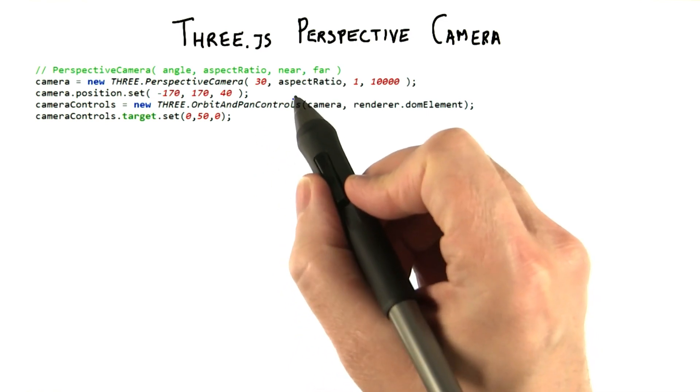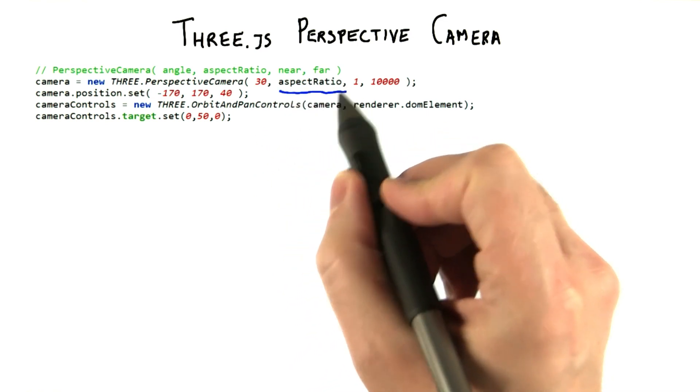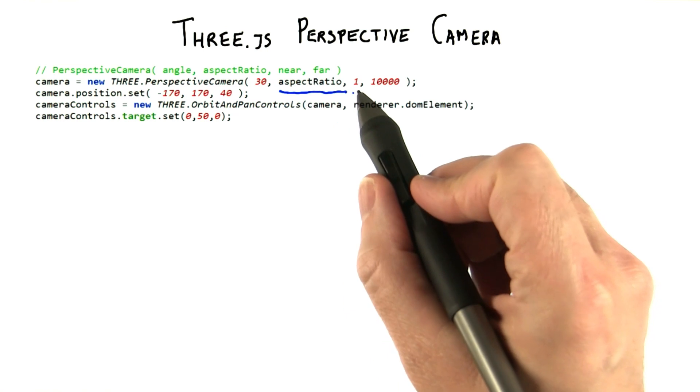We know what the last three are. The aspect ratio is the image width divided by height, followed by the near and far planes.